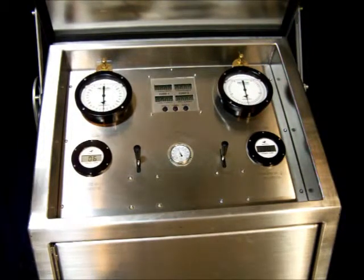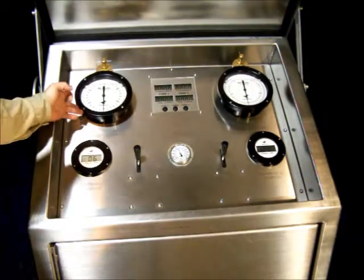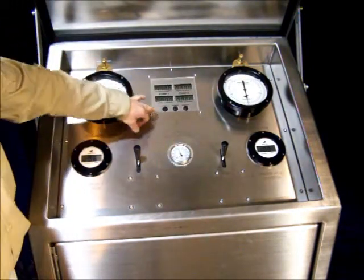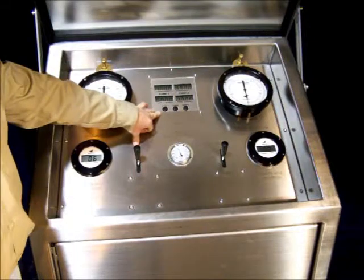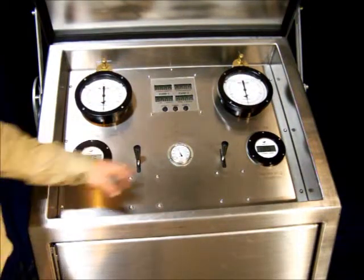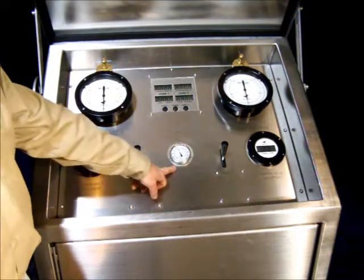This is our electric panel. On the left you have your auxiliary pressure, on the right you have your manifold, here in the middle are your stroke counters. You can run two chokes off this panel and here's your hydraulic pressure.